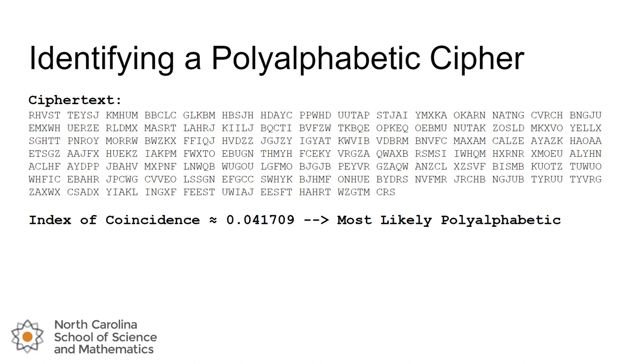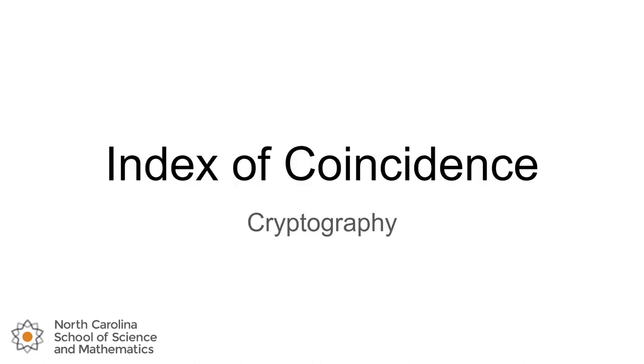If instead we had calculated the score and it was 0.062 or 0.063, then I would probably think this was a monoalphabetic. But that's not the case here. So there we have it. We've got a nice single number that we can calculate relatively easily to determine what the likelihood is of a particular ciphertext either belonging to a monoalphabetic or a polyalphabetic cipher. Thanks for watching, we'll catch you on the next one.